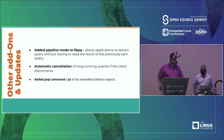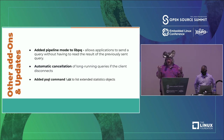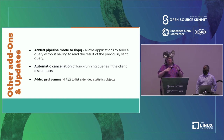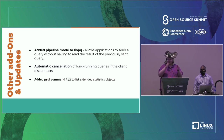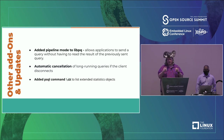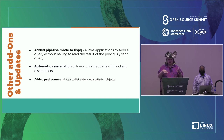Additional updates: pipeline mode was added to libpq, allowing applications to send queries without having to wait for the result of the previously sent query. In a sequential workload where query A, B, and C each take one second but are independent, you'd normally wait three seconds — pipeline mode lets you fire all three at once and use available resources. That's a really cool feature because we see a lot of code bottlenecked on sequential query thinking, though it won't solve cases where you need a result set before running the next query.